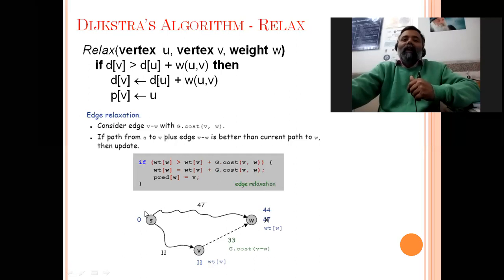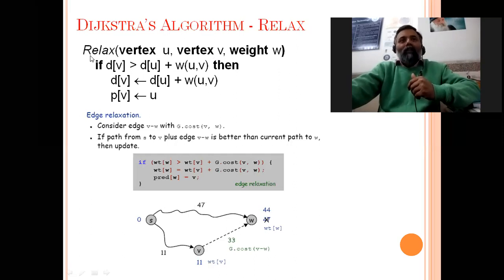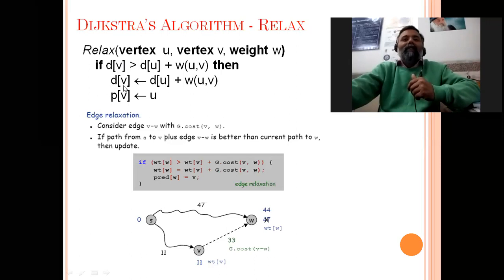This algorithm uses the relax function to find the shortest path. Suppose we have vertex u and vertex v, and the weight on edge uv is some value w. The relax function, when called for these two vertices and the given weight, checks whether d[v] — the distance of vertex v — is greater than d[u] plus weight(u, v). If so, we set d[v] = d[u] + weight(u, v), and u becomes the predecessor of vertex v.